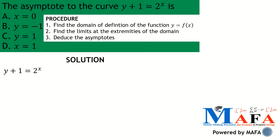Our function given to us is y plus one equals two raised to the power x. According to step one, we need to find the domain of definition of y equals f(x). From the given relationship, we first isolate y: y equals two raised to the power x minus one. So that is our f(x).